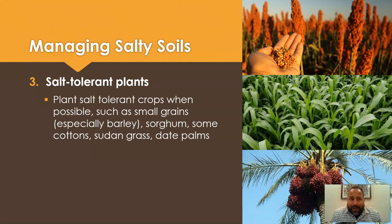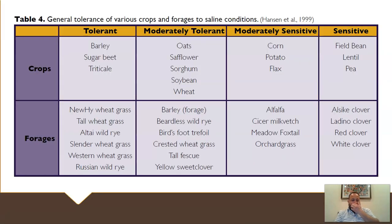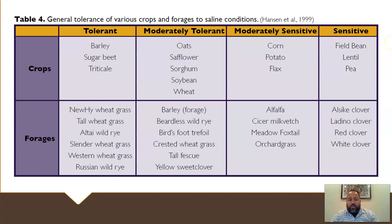The third management idea — and my personal favorite as the least wasteful — is planting salt tolerant crops when possible. Highly tolerant options include barley, sorghum, some cottons, sudangrass, date palms, sugar beets, and triticale. In terms of forages, wheat grasses and wild ryes are highly tolerant. Moderately tolerant crops include oats, safflower, soybeans, wheat, trefoil, tall fescue, and sweet clover. All of these have good tolerance for saline conditions.